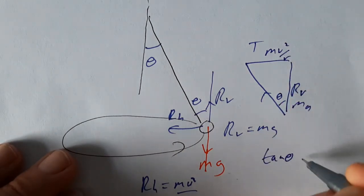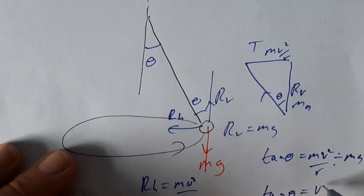So in this case, tan theta would equal mv squared over r divided by mg. So again, tan theta equals v squared over rg.